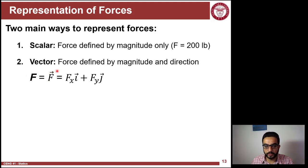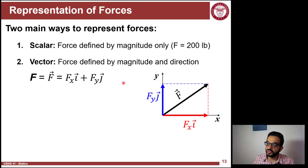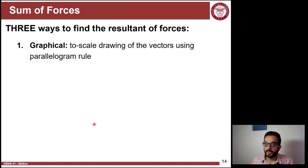A force vector can be shown as a bold letter or a letter with an arrow on top. This is the graphical representation, and you can see Fx and Fy, the components of it. Another example: if you have 200 pounds in the x direction, this is how to write it in vector format.